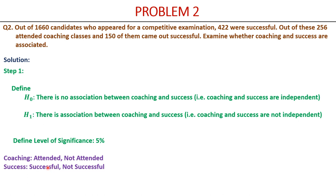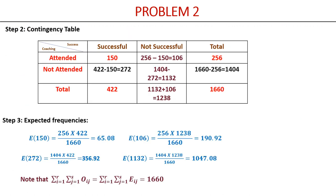We set up the two-way contingency table with coaching (attended/not attended) along the rows and success (successful/not successful) along the columns. The pink values are given; the remaining cells are found by subtraction. Expected frequencies are computed as (row total × column total) / N for each cell, and the sum of all expected frequencies is verified to equal 1660.